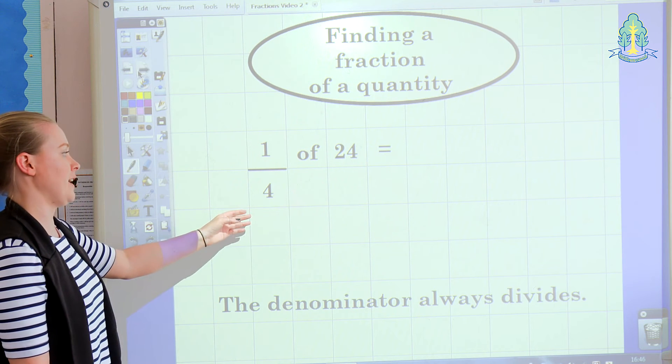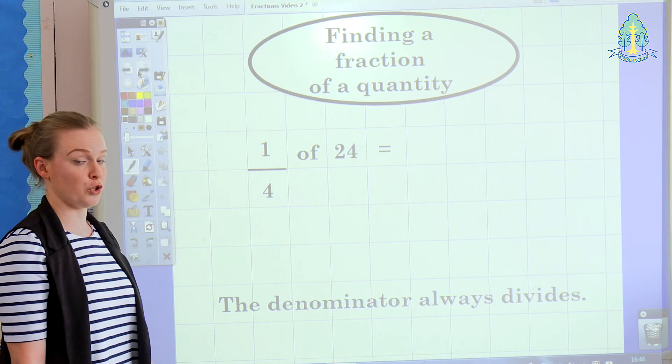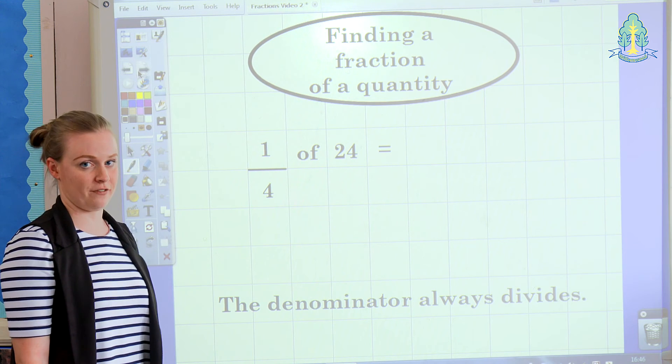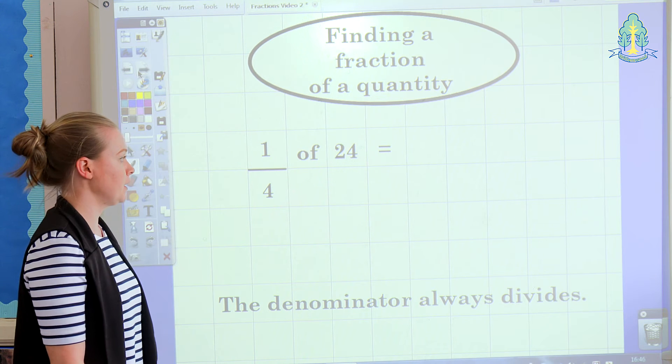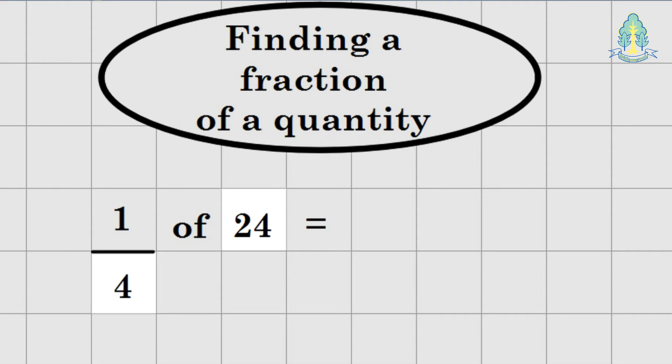In this example, the children are asked to find a quarter of 24. The children are told that the denominator always divides when finding a fraction of a number. So in this example, we're going to do 24 divided by 4. There are 6 4s in 24 so the answer is 6.